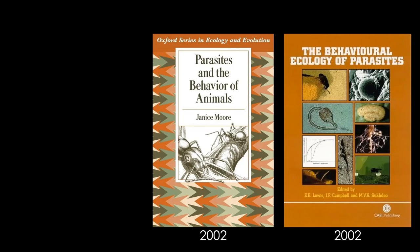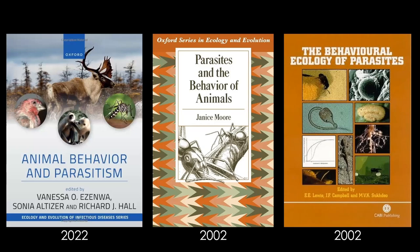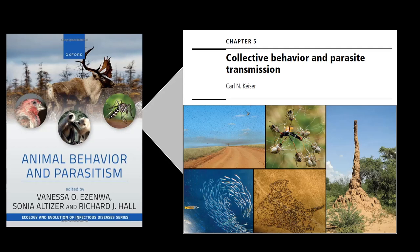Twenty whole years went by before the next book was published on this topic. Just last year, Vanessa Zenwa and colleagues at the University of Georgia published Animal Behavior and Parasitism. They invited me to write a chapter on social behavior and parasite transmission — can a social group experience disease outbreaks because of the way they interact and move around the world?